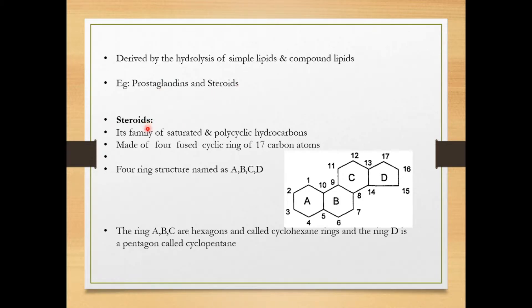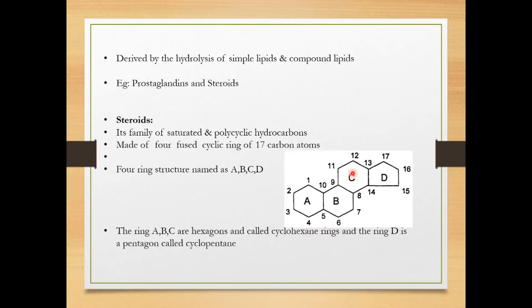Let's come to the steroids. Steroids are a family of saturated and polycyclic hydrocarbons made up of four fused cyclic rings of 17 carbon atoms. These four fused cyclic rings are named A, B, C, and D. There are 17 carbon atoms from one to seventeen. Rings A, B, and C are hexagonal in shape and are called cyclohexane rings. Ring D is pentagonal and is called a cyclopentane ring.